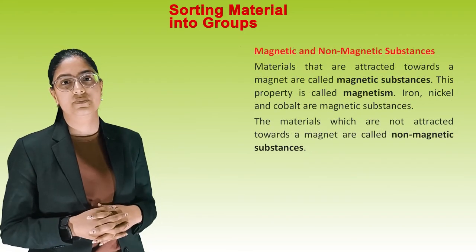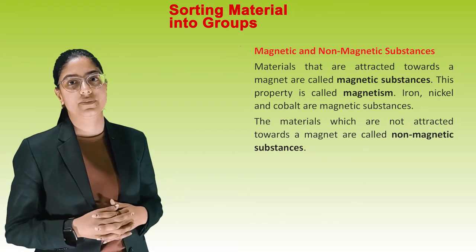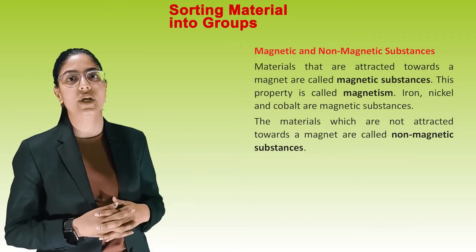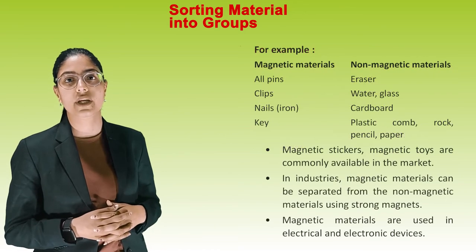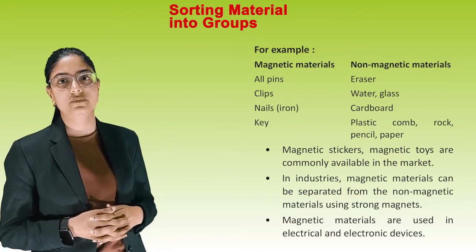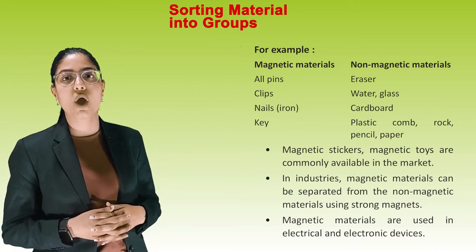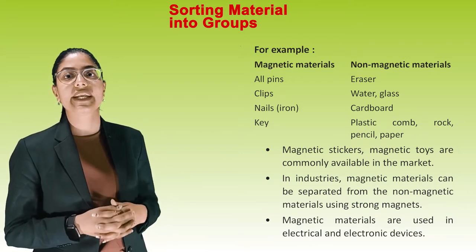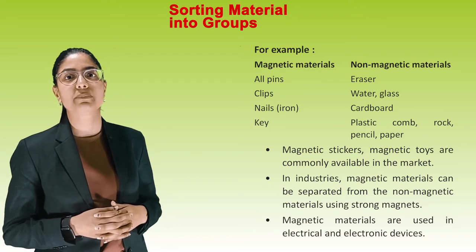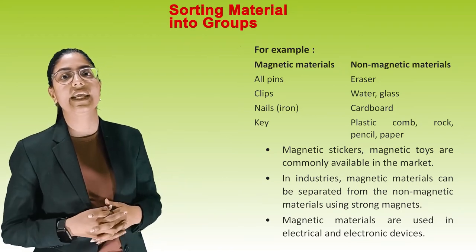Materials that are attracted towards a magnet are called magnetic substances; this property is called magnetism. Iron, nickel, and cobalt are magnetic substances. Materials which are not attracted towards a magnet are called non-magnetic substances. Magnetic materials include pins, clips, nails, iron key. Non-magnetic materials include eraser, water, glass, cardboard, plastic comb, rock, pencil, and paper. Magnetic stickers and toys are commonly available. In industries, magnetic material can be separated from non-magnetic material using strong magnets. Magnetic materials are used in electrical and electronic devices.